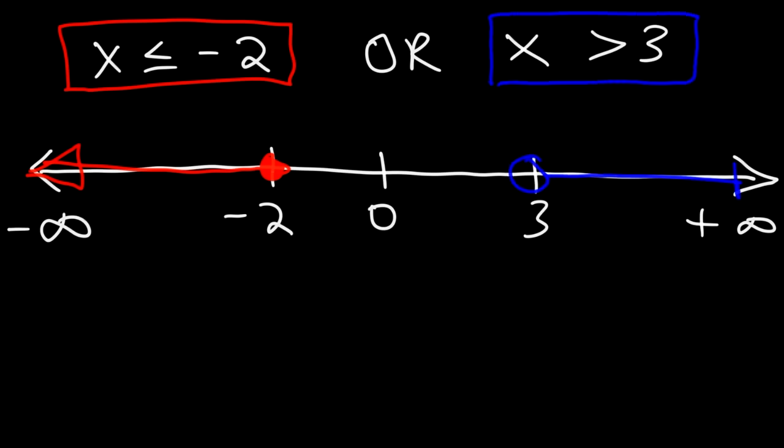Here's the next example: 3x > 18. All we need to do is get x by itself. Since 3 is multiplied to x, we divide both sides by 3. 3x divided by 3 is x, and 18 divided by 3 is 6. So the answer is x > 6.